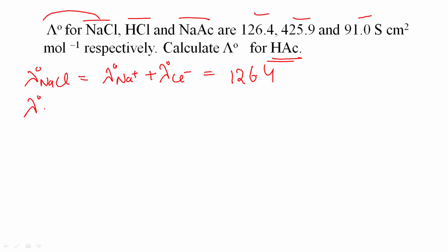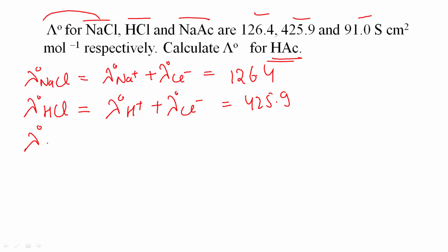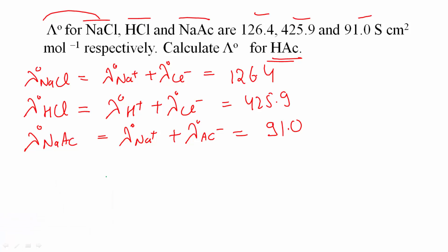Limiting molar conductivity of HCl equals limiting molar conductivity of H⁺ plus Cl⁻, and the value given is 425.9. Limiting molar conductivity of sodium acetate equals the sum of that of Na⁺ ion plus acetate ion, and that is given as 91.0.